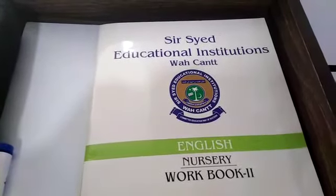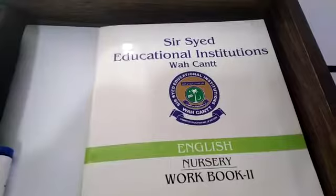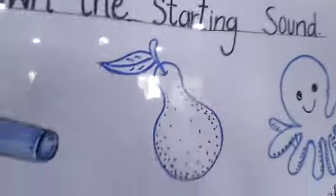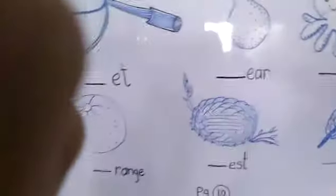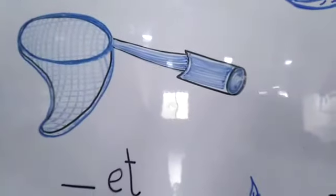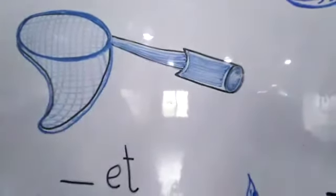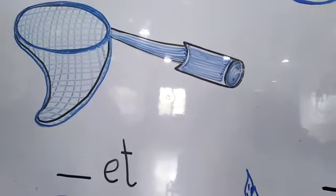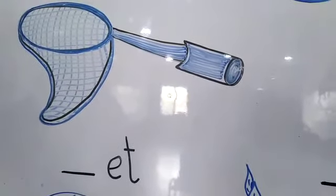In English we are going to learn a new lesson and the topic is write down the starting sound. Now students, you can see there are different pictures. Now I am going to write the starting sound of these pictures.